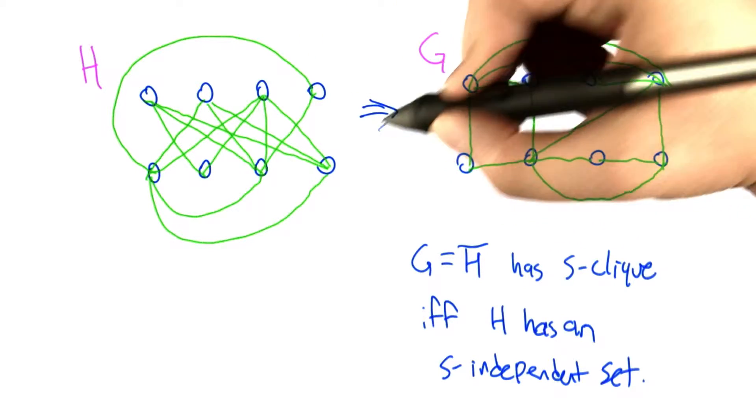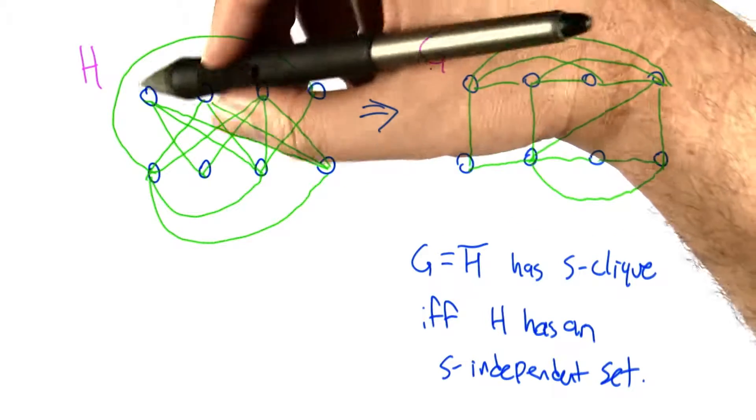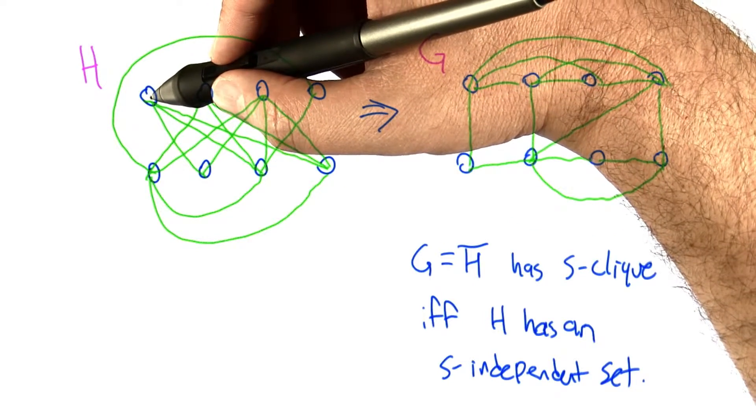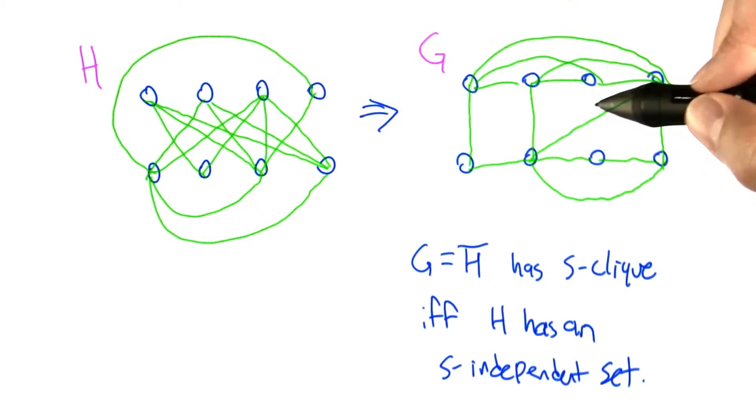What we're going to do is convert this to a new graph G, which is the complement of H. Every place in H where there is an edge, we leave the edge out. Every place where there's not an edge, we add an edge.